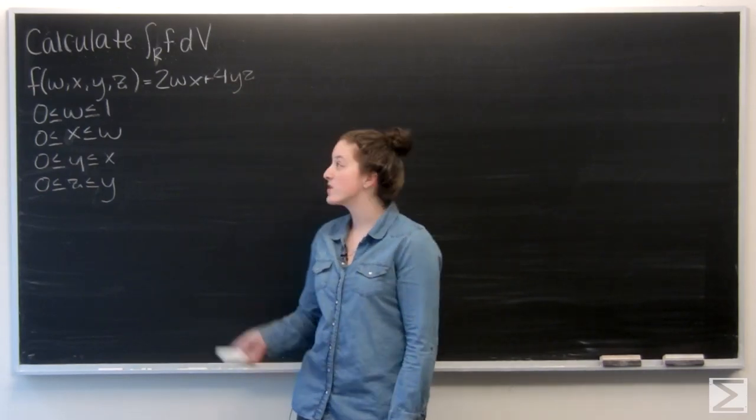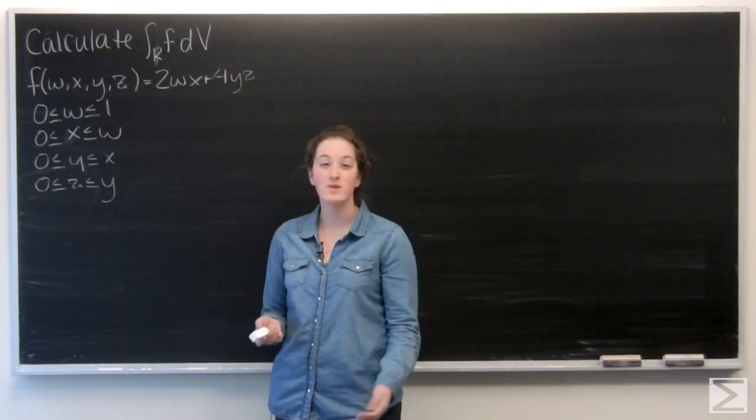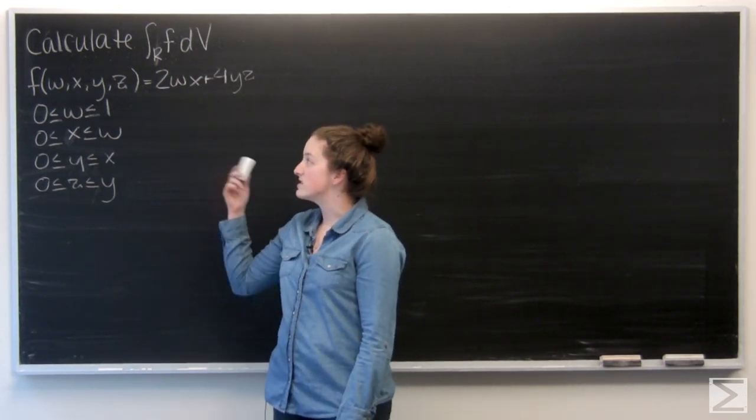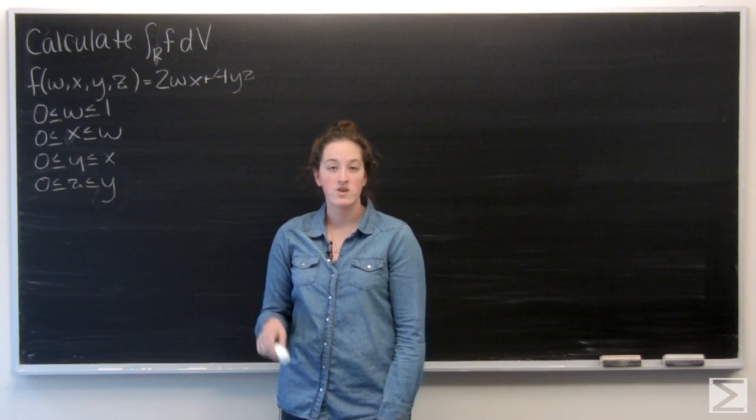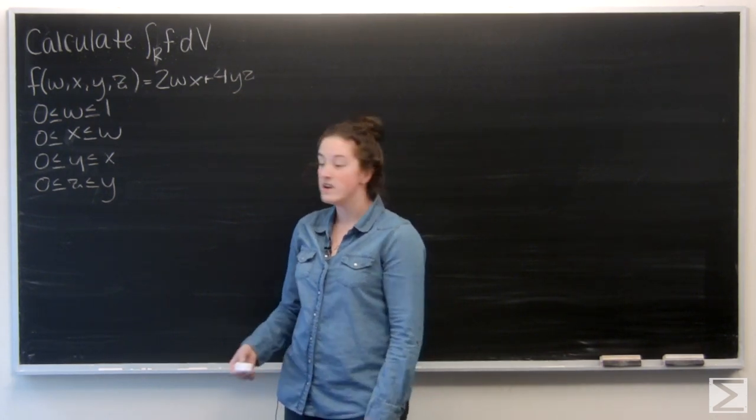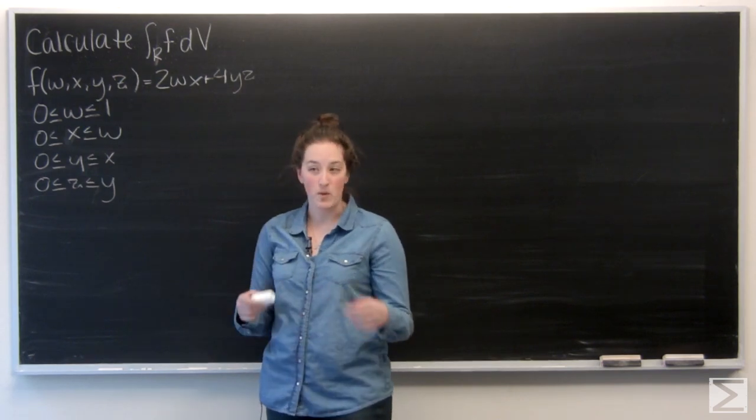Okay, so for this problem we're given an iterated region, this time in R4 instead of R3. They want us to calculate the integral of this function over the area. So integrating in R4 is just like integrating in R3. We have an iterated region, just going to take one at a time.